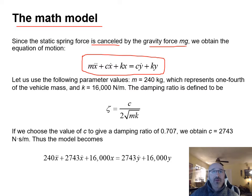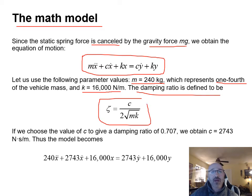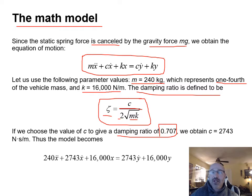For a specific example, let mass equal 240 kilograms — this is a one-fourth car model — and k equals 16,000 N/m. The damping ratio is defined as c divided by two times the square root of mk. We need a damping ratio of 0.707.